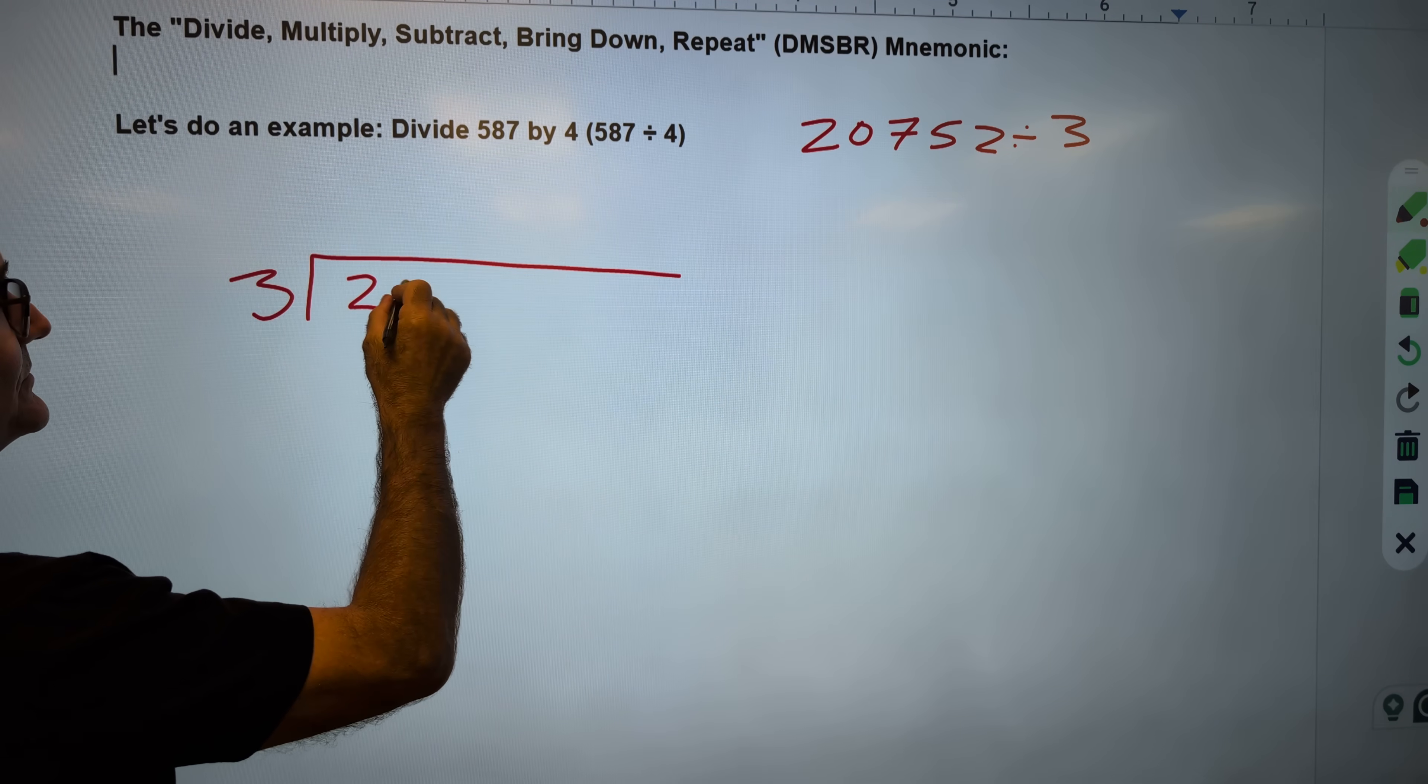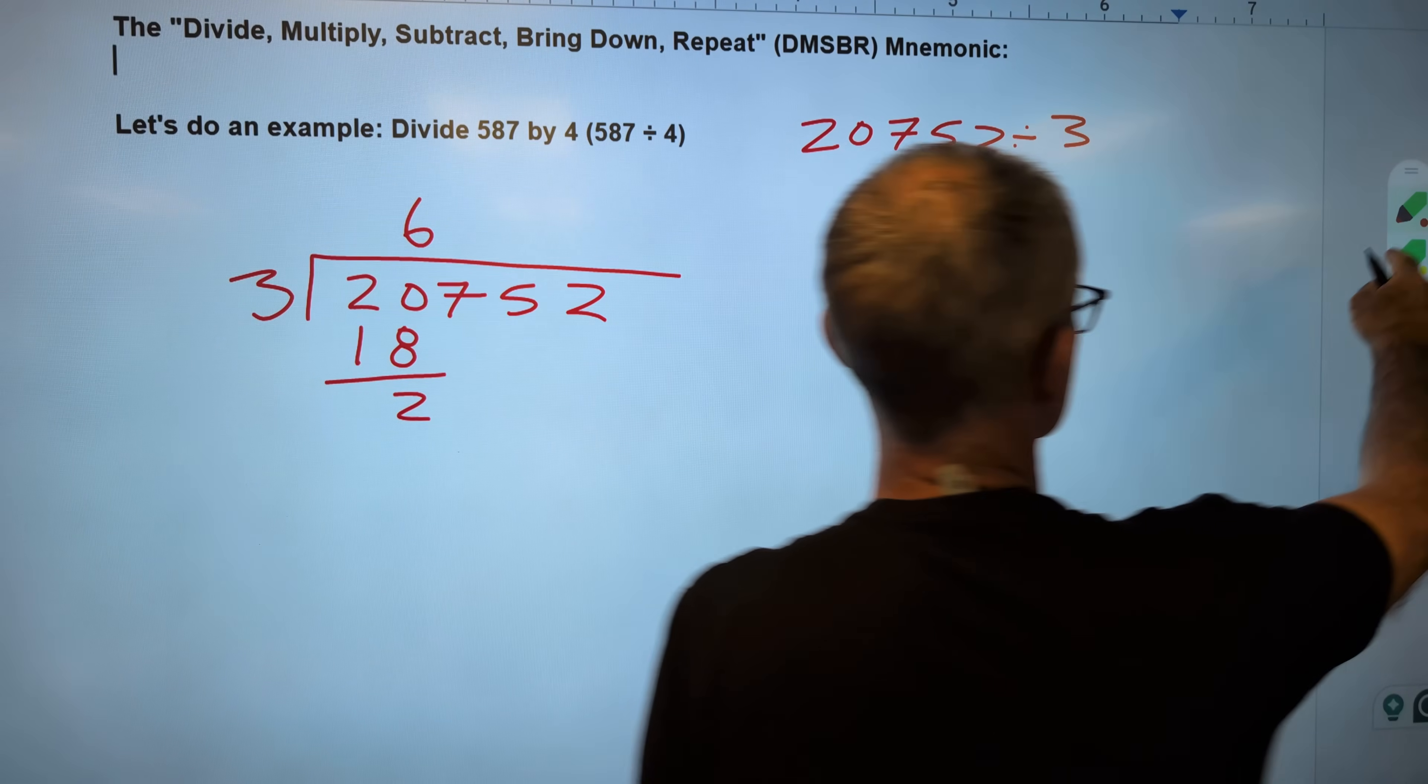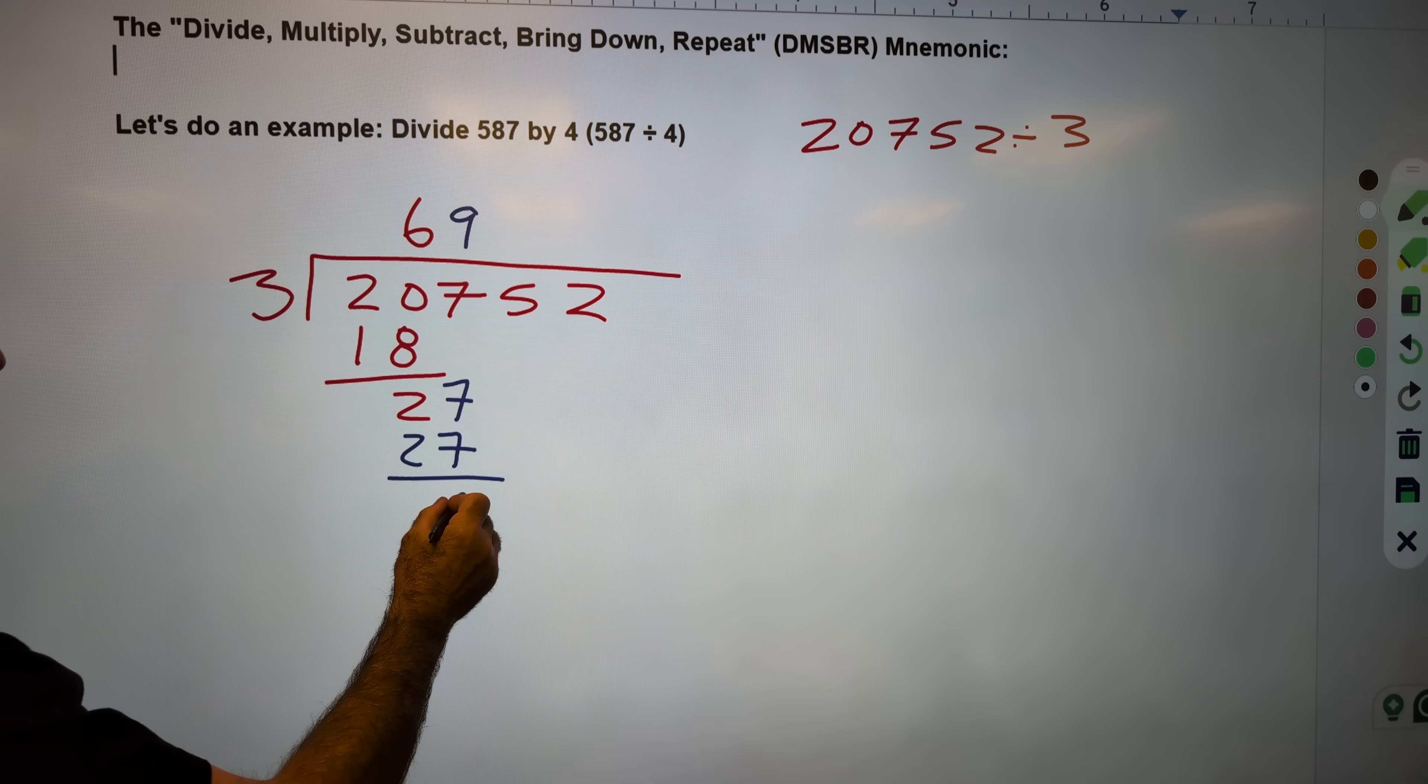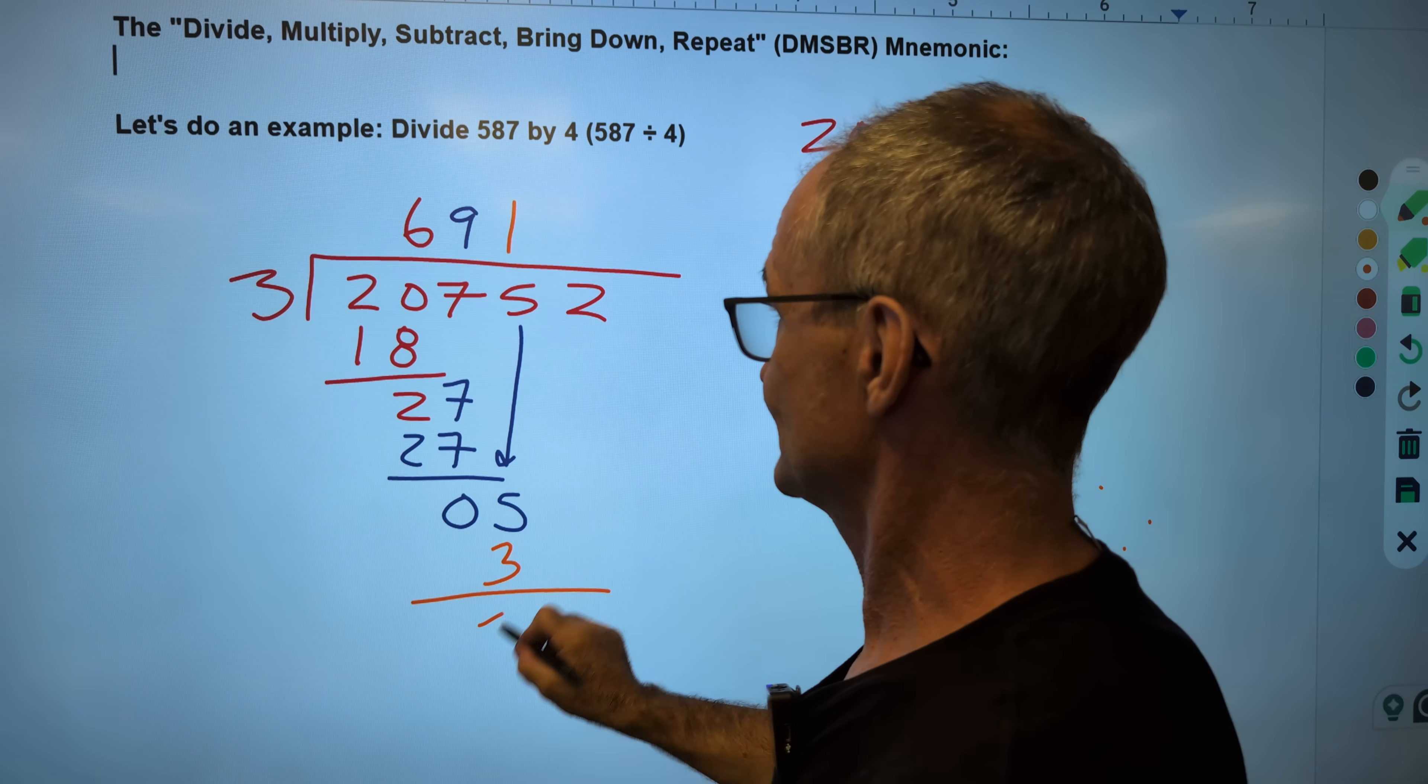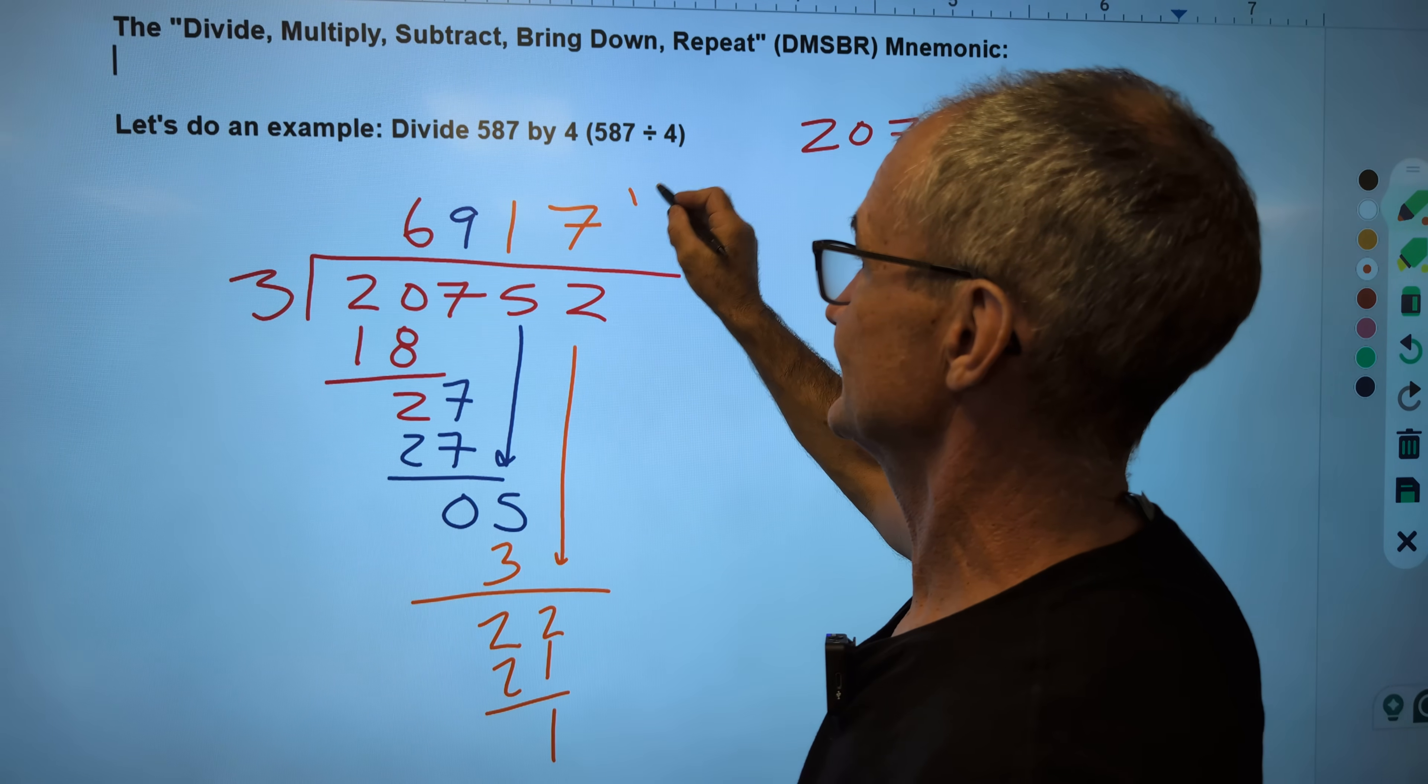So how many times does 3 go into 20,752? 3 go into 2? It doesn't. 3 go into 20? Yes, it goes in 6 times to give me 18. 20 minus 18 is 2. Bring down the 7. 3 goes into 27 nine times evenly. 27. Subtract. Zero. Bring down the 5. 3 goes into 5 one time. Multiply. Subtract. Bring down the 2. 3 goes into 22 seven times. 21. Subtract 1. Remainder of 1. My answer is 6,917 and one-third.